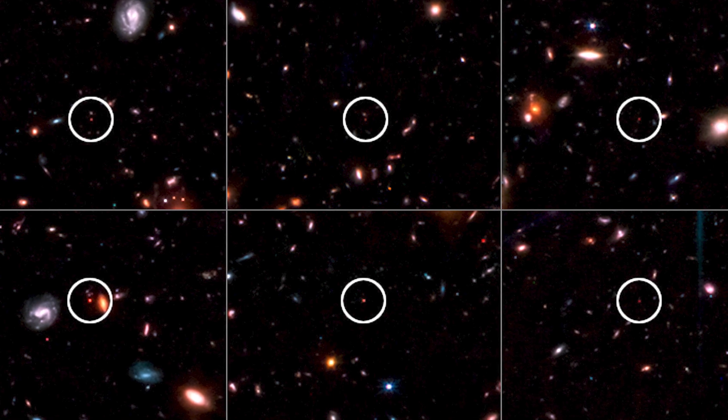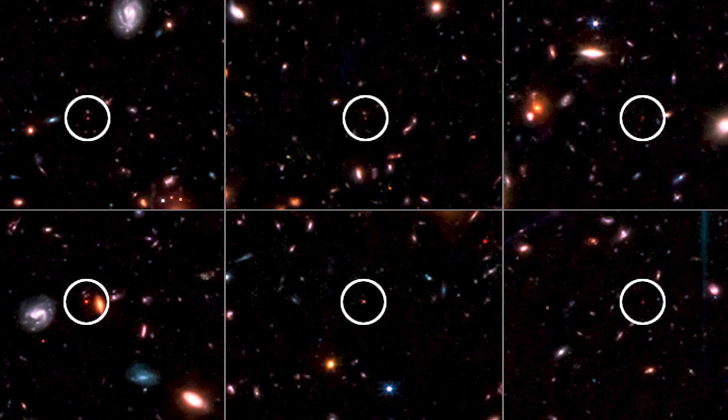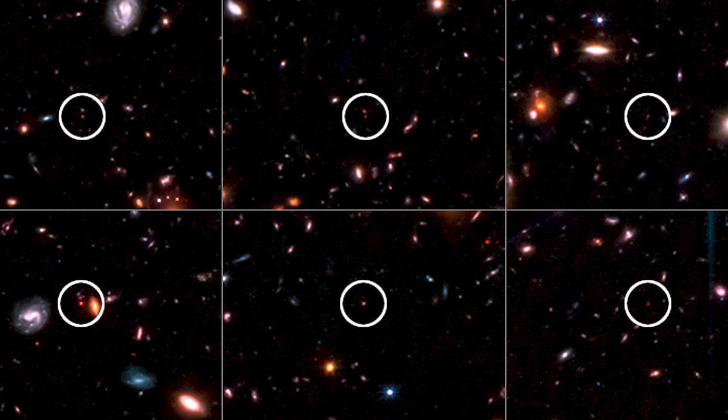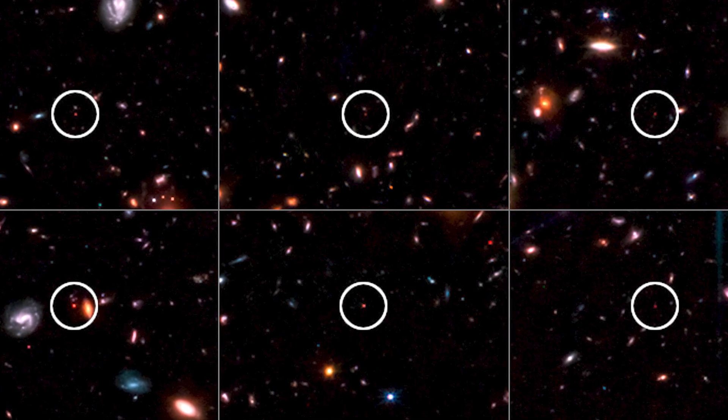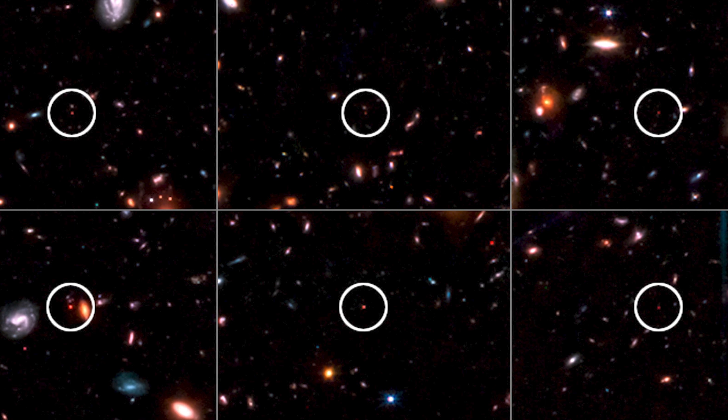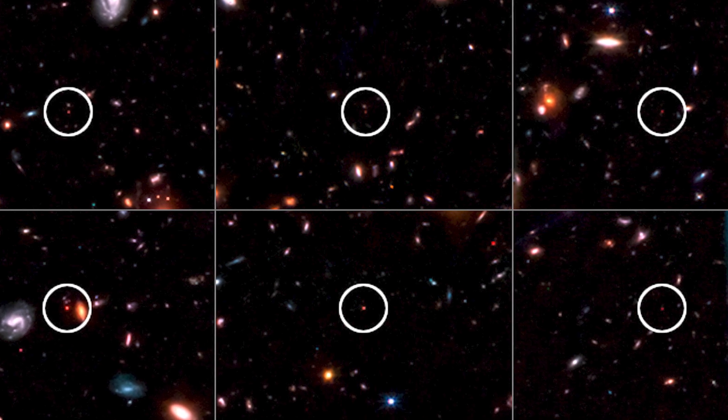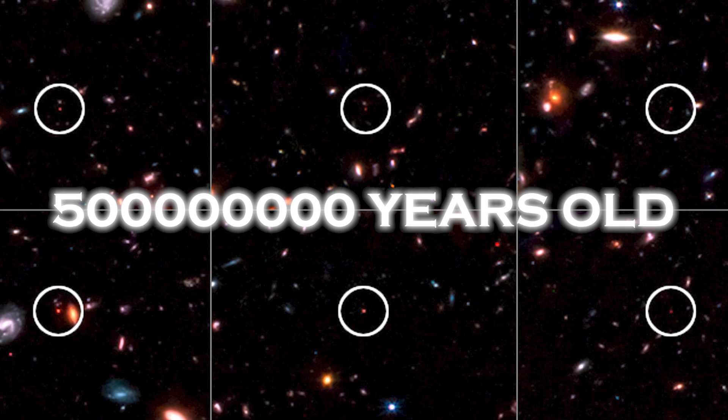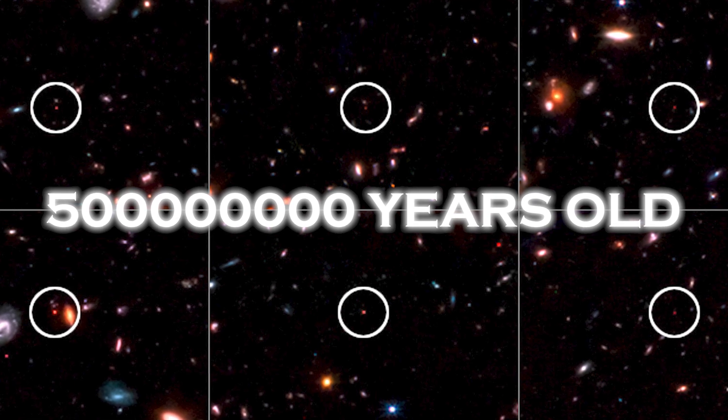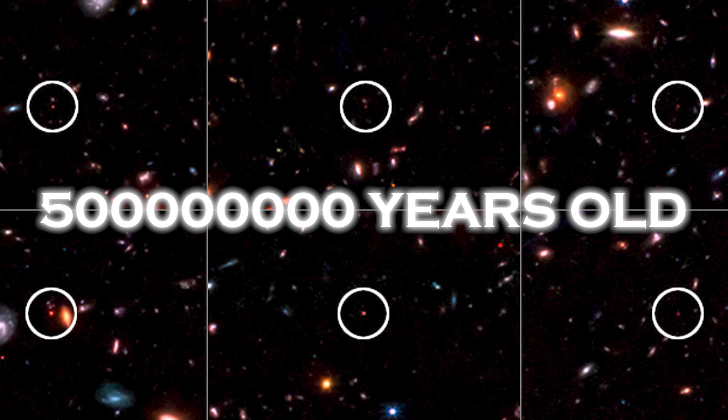However, the question arises, why does the discovery of these six large galaxies contradict the conventional description of the origin of the universe? These galaxies should be no larger than the Milky Way galaxy, which is only 500 million years old. Something doesn't add up, and perhaps we need to revise our theory of the creation of the universe.